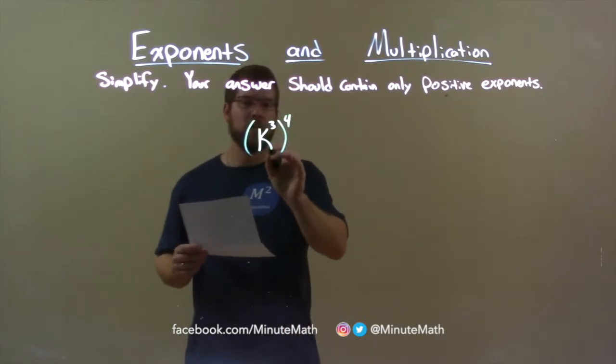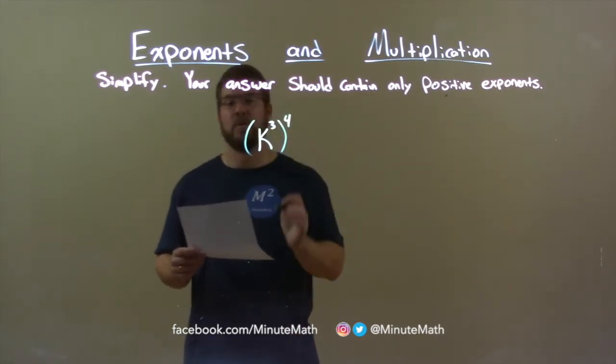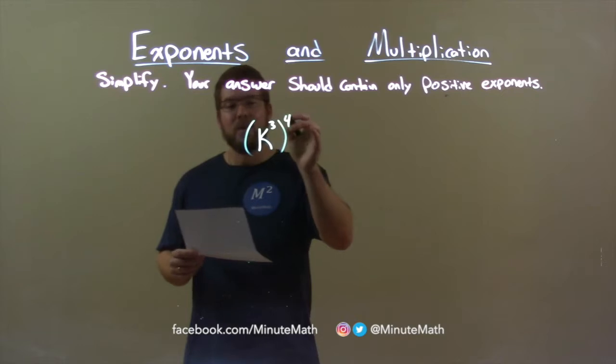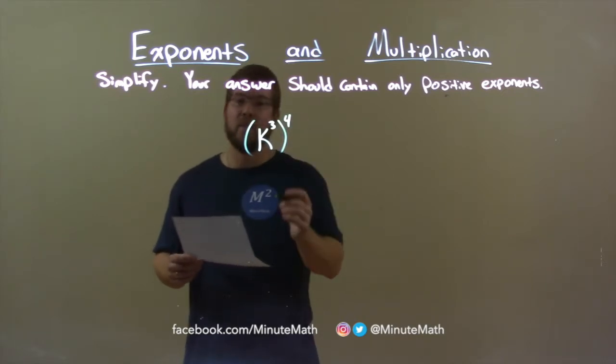When we have a variable to an exponent and all of that raised to another exponent, when we combine them, we just have to multiply the exponents.